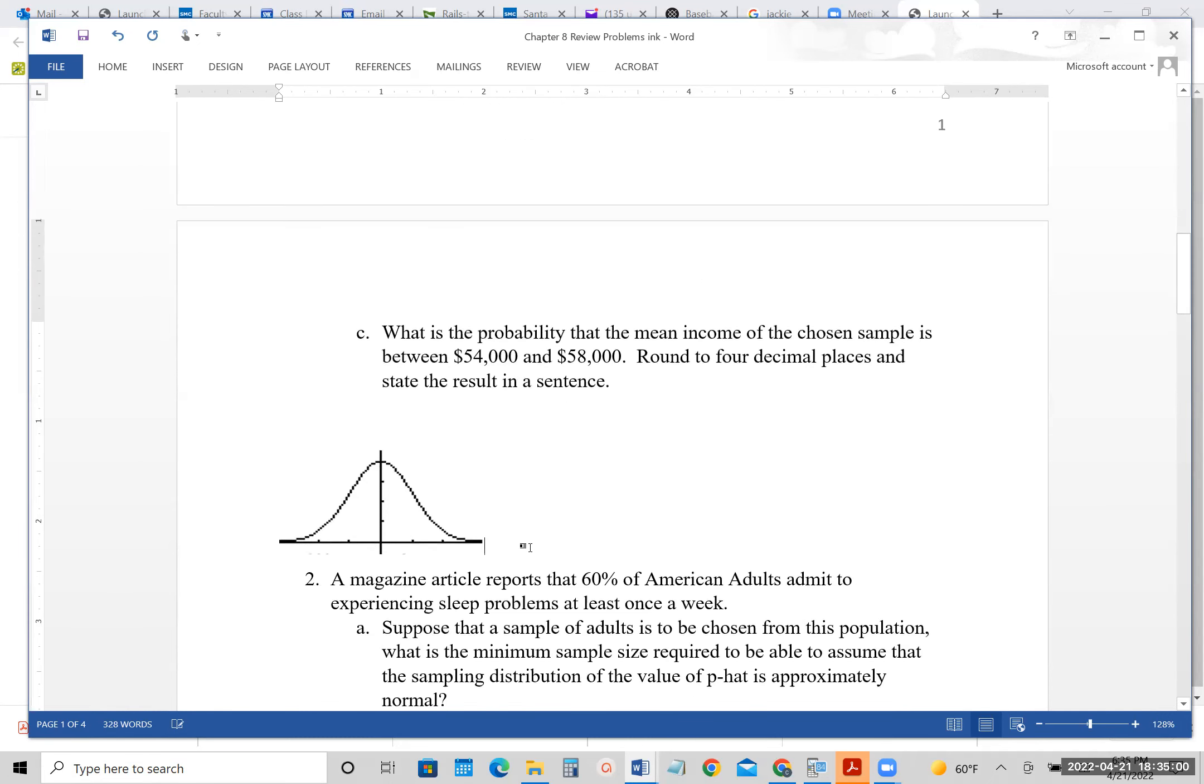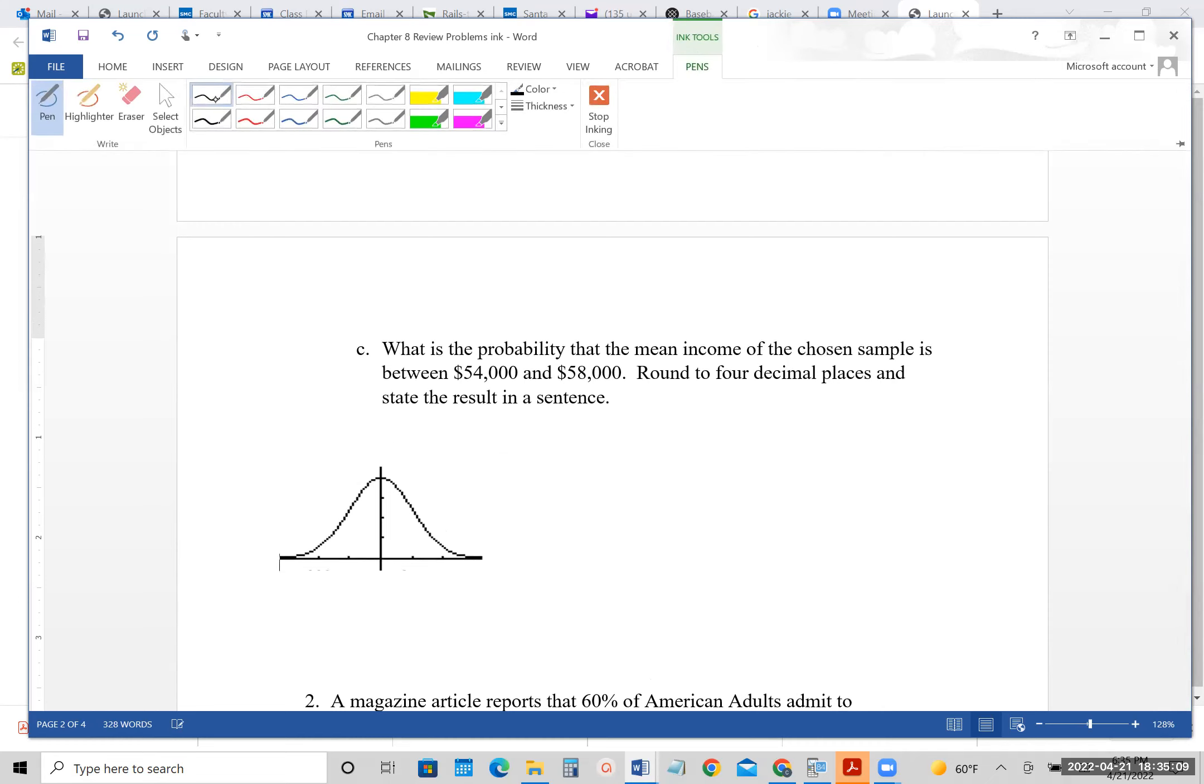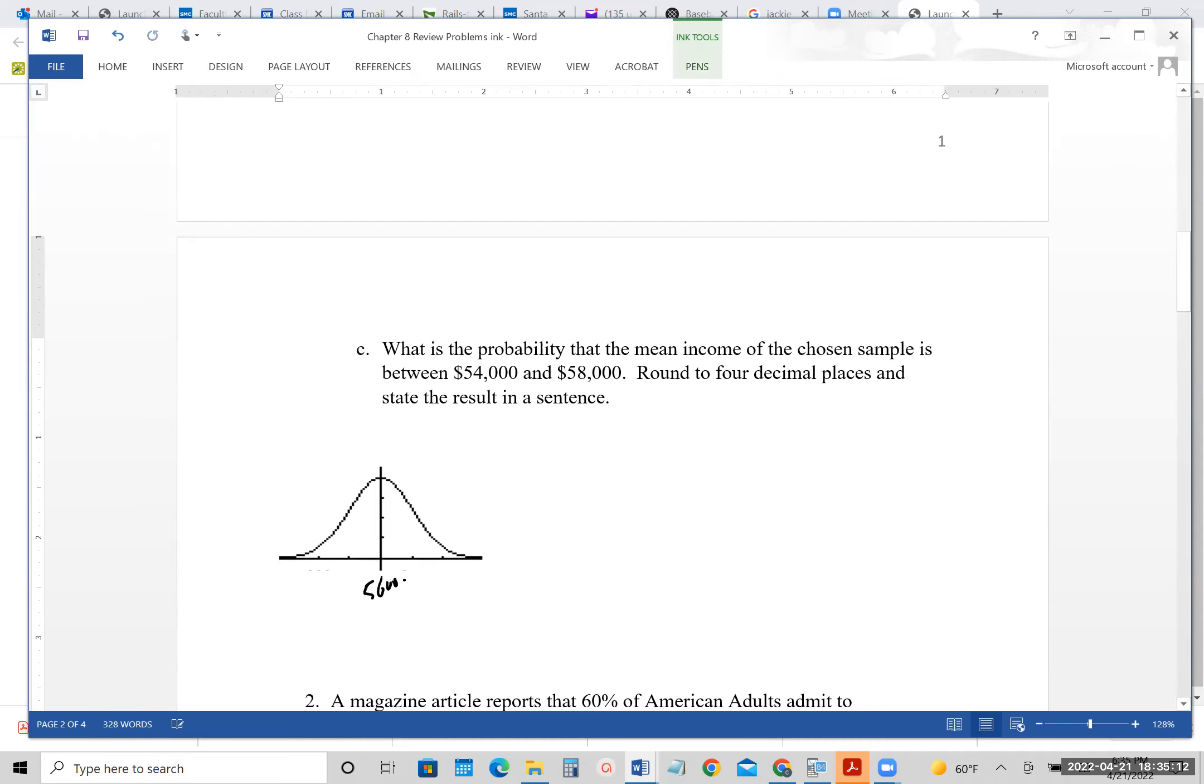Part C, for this one, they want to know what is the probability to be between 54,000 and 58,000? Well, the 56,000 is in the middle, so 58 will be on the right, the 54 will be on the left, so we want the probability that X bar is between those two. So that would be our normal CDF, 54,000 comma 58,000, that would be our upper and lower bound, and then we do the 56,000, and then the 10,000 divided by the square root of 100.